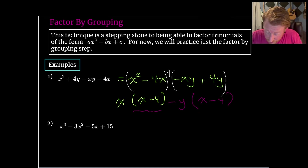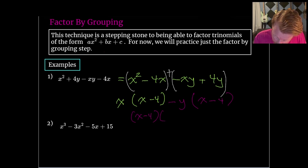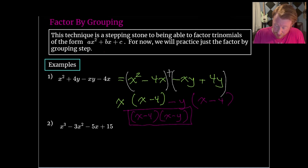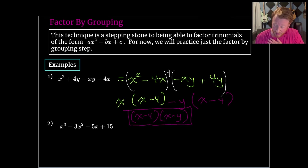If we factor out a negative y, that will leave us with a positive x minus 4. Now we can see there is an x minus 4 in common with both of these terms. So we factor out that x minus 4, and what's left behind is just the x minus y. There is our factorization. If we wanted to check our answer, we could just FOIL that out and use the distributive property, and we'll see that we get back to where we started.